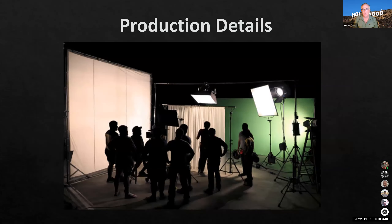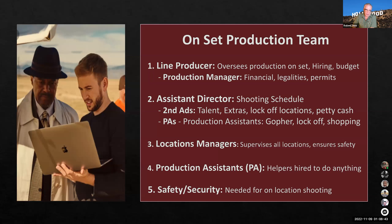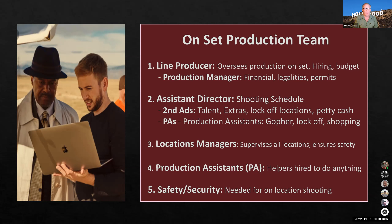On the set production team: you have your line producer, production manager, and the assistant director who is in charge of the shooting schedule. The assistant director is a very important person in production — they're not the director's helper. They have their own responsibilities: organization, logistics, timing, and schedule, so the director and DP can focus on their creative elements without worrying about time, union rules, and logistics.